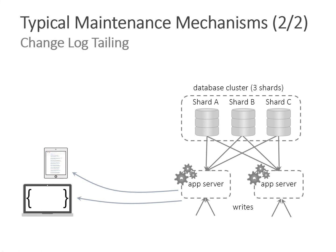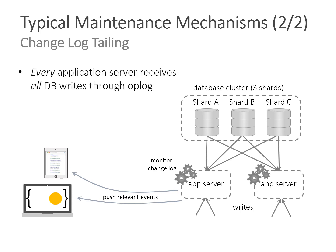Another approach that avoids periodic polling is change log tailing. All application servers subscribe to the entirety of the database change log. If a server on the right receives a write operation, it writes to the database and the other server doesn't have to poll — the change is delivered via the database change stream. The app server essentially pretends to be a database replica. It receives the update, checks whether any subscribed queries are affected, and sends out notifications. This avoids both the latency of polling and the read scalability bottleneck.